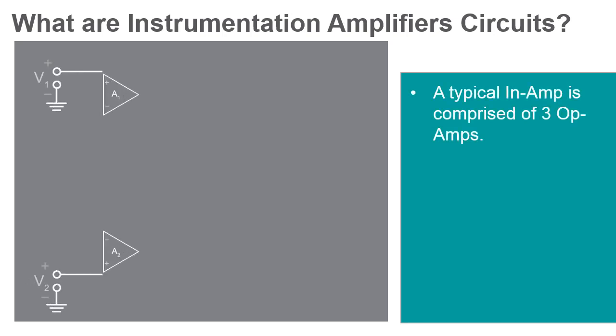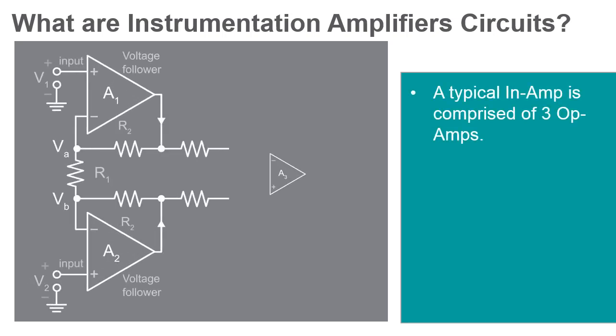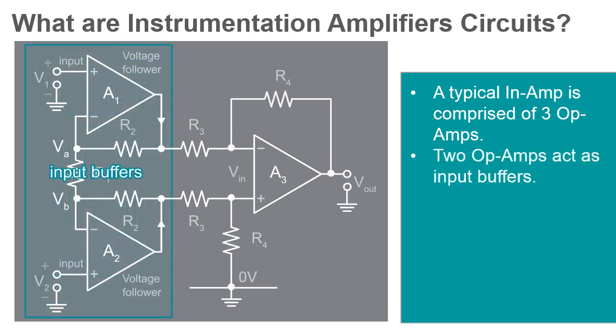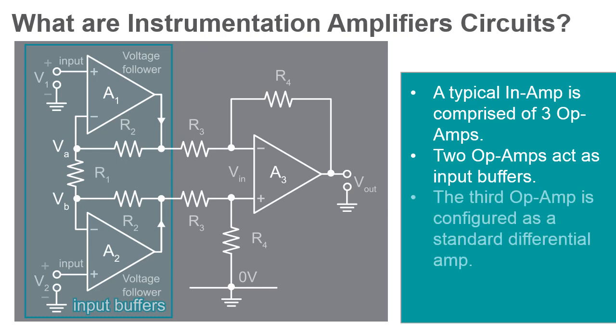An instrumentation amplifier is a specific type of operational amplifier comprised of three op-amps. Two of the op-amps act as input buffers for the third op-amp, which is configured as a standard differential amplifier.